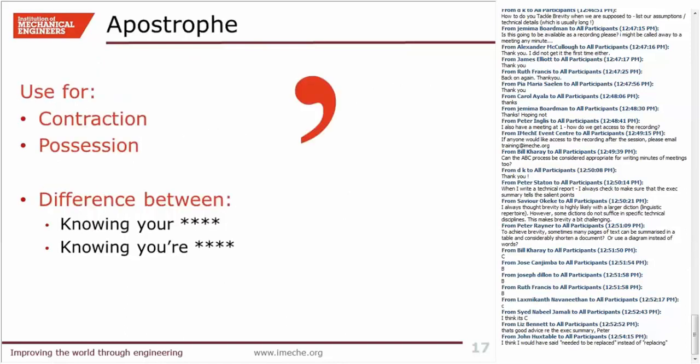In summary, we use apostrophes for two purposes: one is the contraction, and one is the possession. Some people describe the use of the apostrophe as the difference between 'your' and 'you're' — knowing that distinction actually could make quite a bit of difference in your meaning.